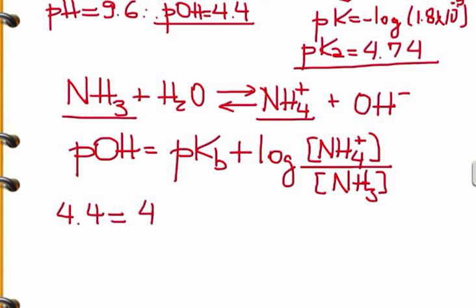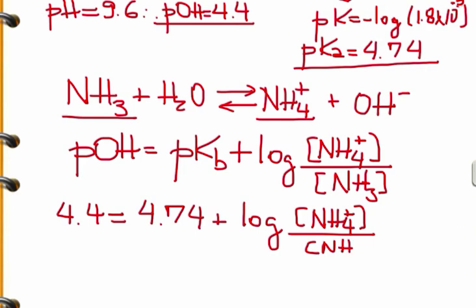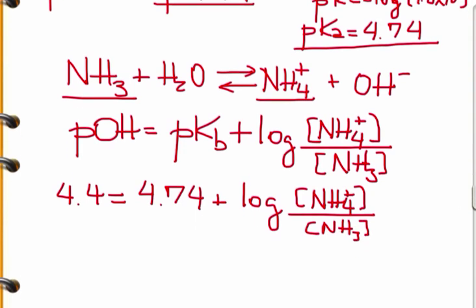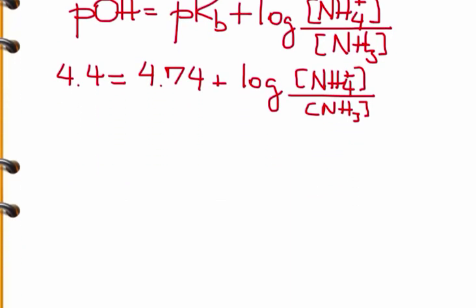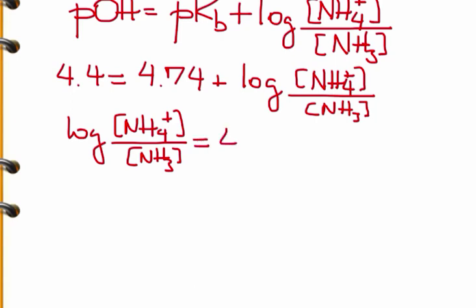4.4 equals 4.74 plus log([NH4+]/[NH3]). So log([NH4+]/[NH3]) equals 4.4 minus 4.74.